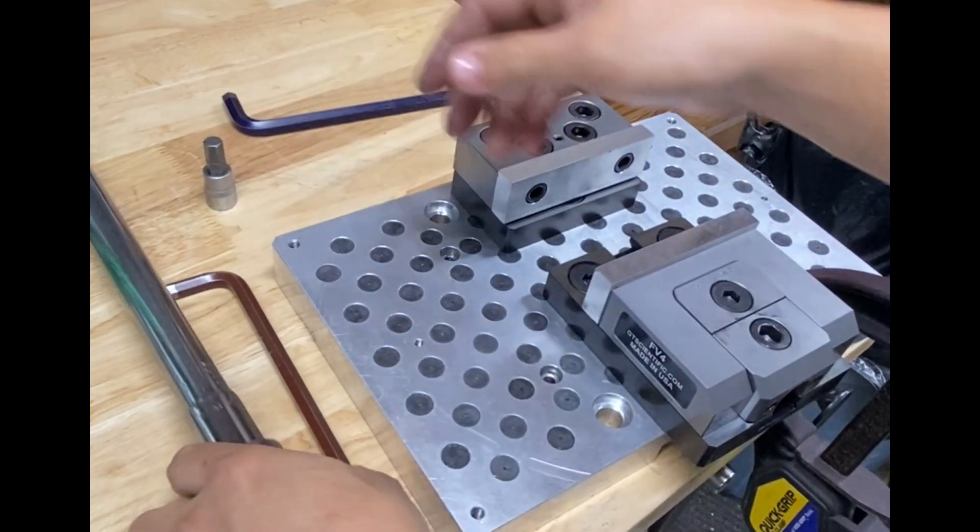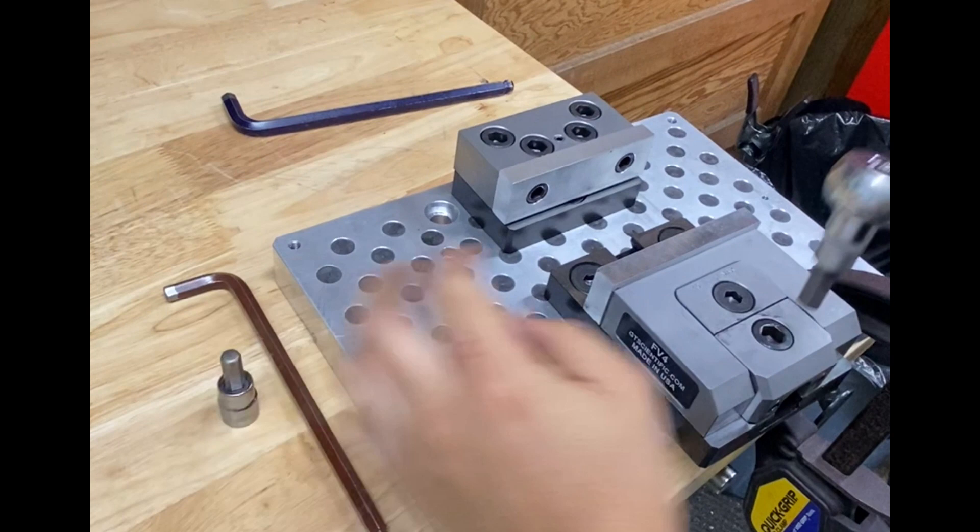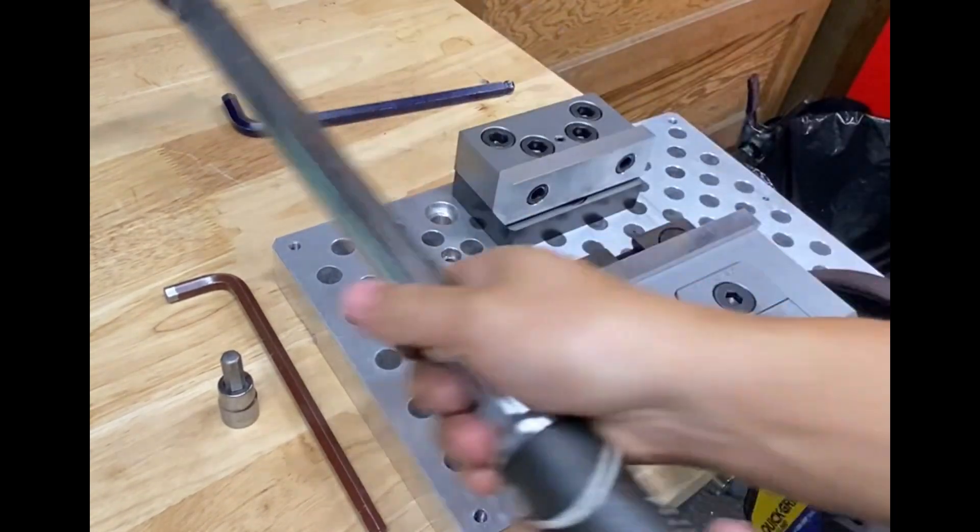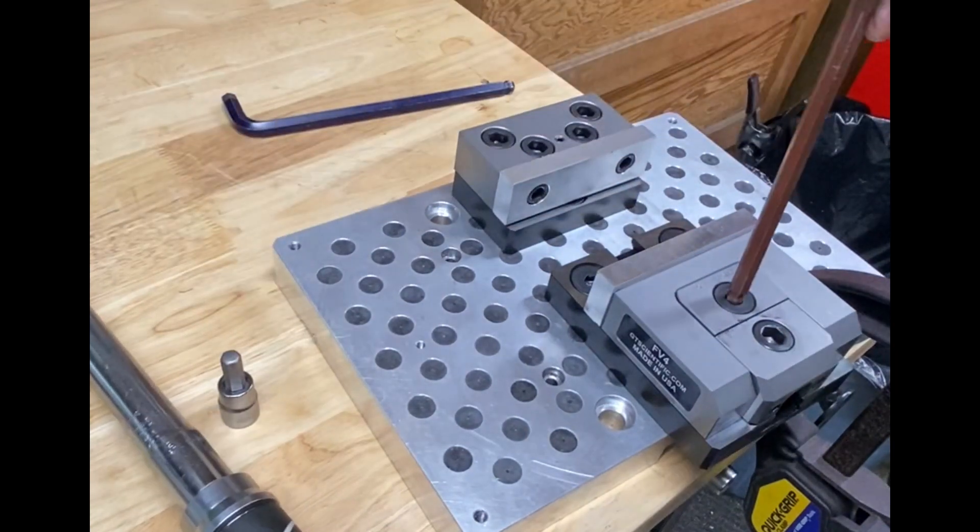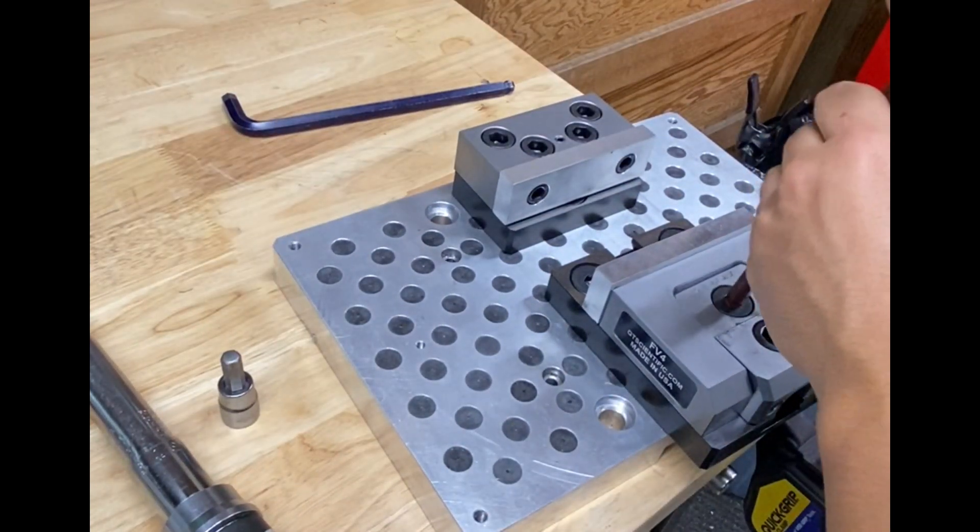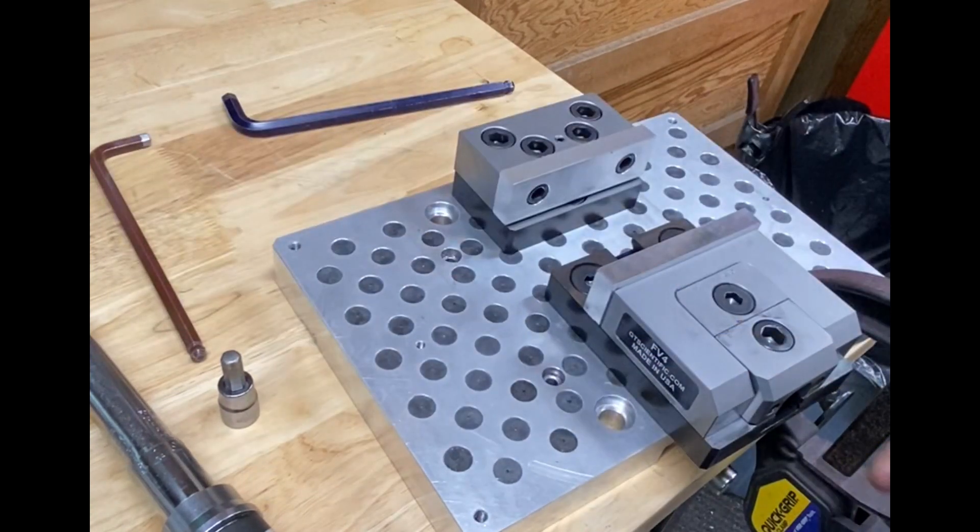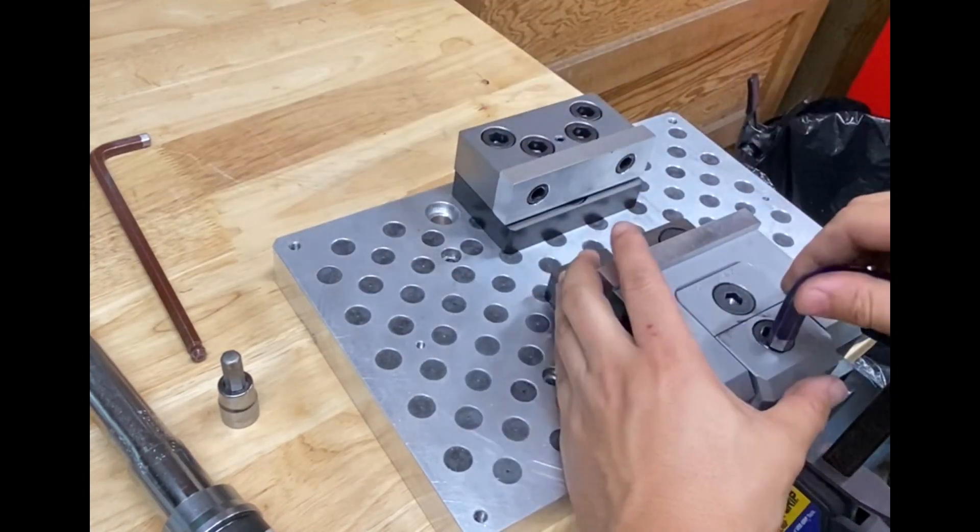Then you just slide it in like so, tighten this down 50 foot pounds again. Generally speaking that's about it.